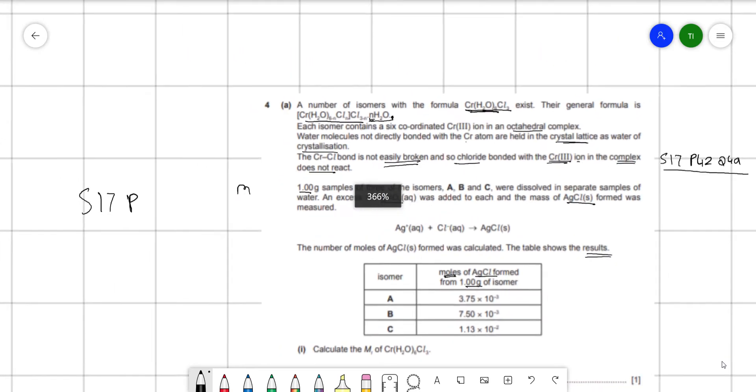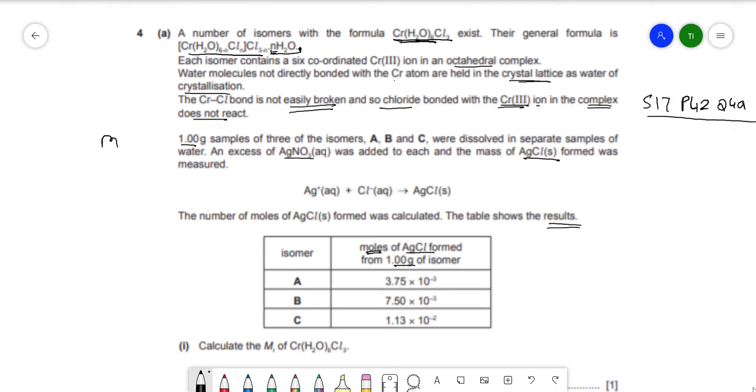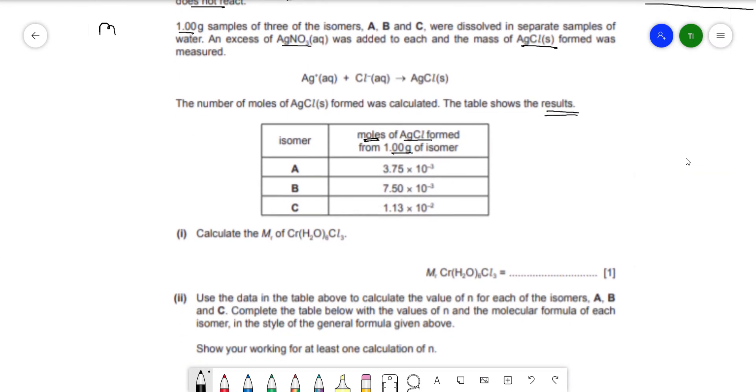The first part is quite simple. It just asks you to calculate the MR of CrH12O6Cl3. For this, you really just use the periodic table, the one that's provided to you, the data booklet, and you calculate the MR. It's a direct question, so it's like a free one mark. And the answer is 266.5 when you add everything up.